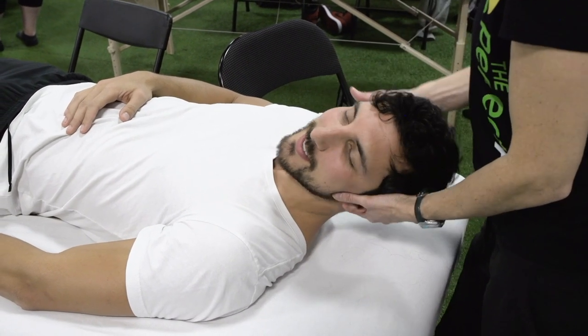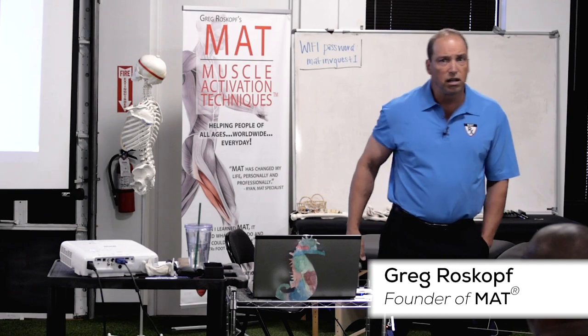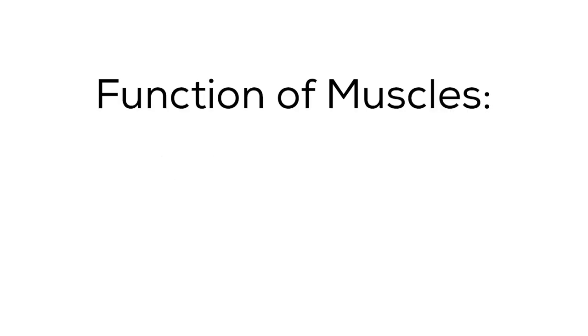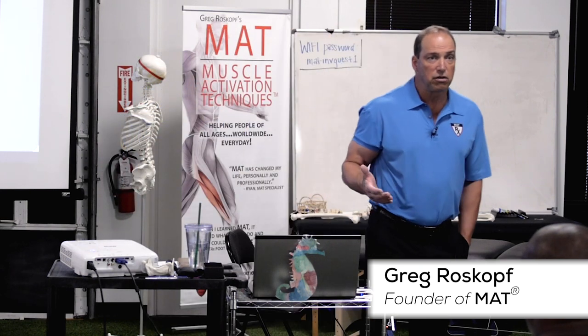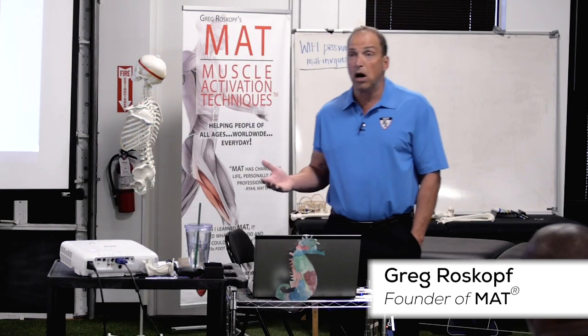As long as there's not a structural change limiting the motion, the idea is that muscles move bones and hold bones in proper alignment. If muscles aren't contracting efficiently, they can't stabilize joints and protect you from injury, and they can't move bones. So when muscles can't contract effectively, it will show up as a limitation in range of motion.